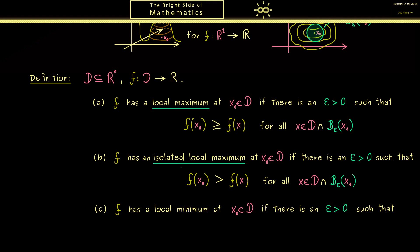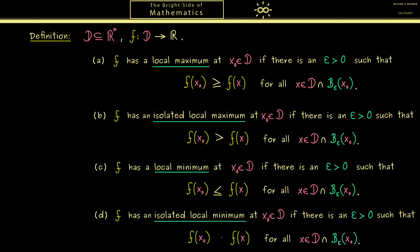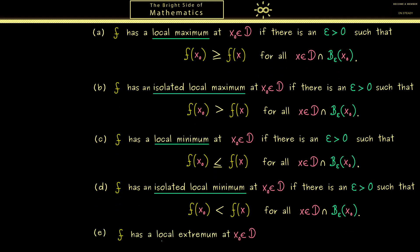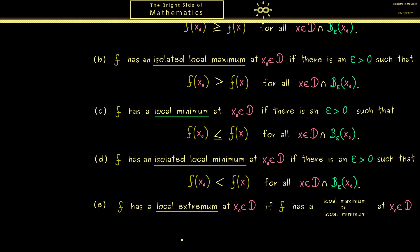Not so surprisingly, we can formulate exactly the same things for local minima. The only thing that changes is the direction of the inequality — f should be smaller than every other value in the neighborhood. And exactly the same we can formulate for the isolated local minimum, where we have the strict inequality. With all of that, a local extremum simply means that f has a local minimum or a local maximum. The term 'local extrema' just puts local maxima and minima into the same box, which is helpful since we are often interested in both at the same time.